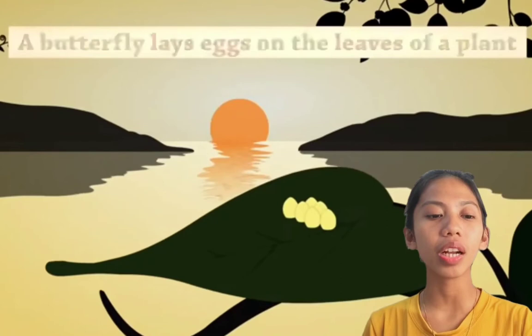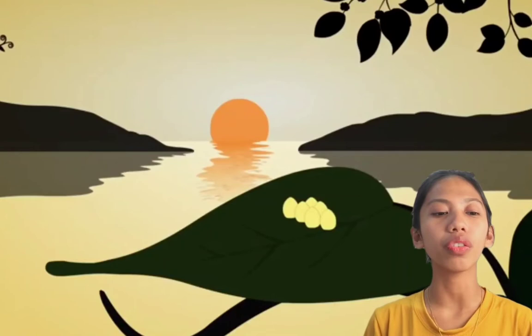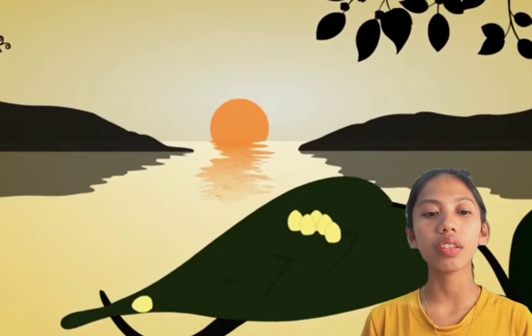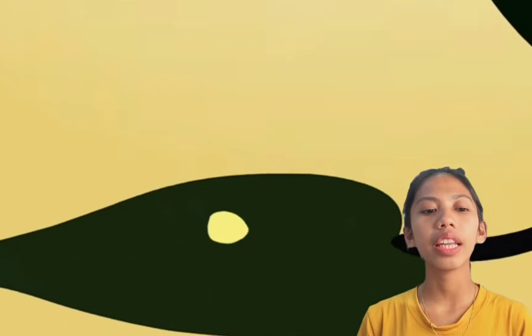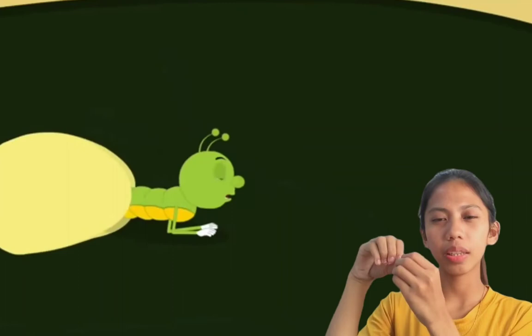Eggs are laid on plants by the adult female butterfly. These plants will then become the food for the hatching caterpillars. Eggs can be laid from spring, summer, or fall — this depends on the species of butterfly. Females lay a lot of eggs at once so that at least some of them survive. Butterfly eggs can be very small, like the head of a pin.